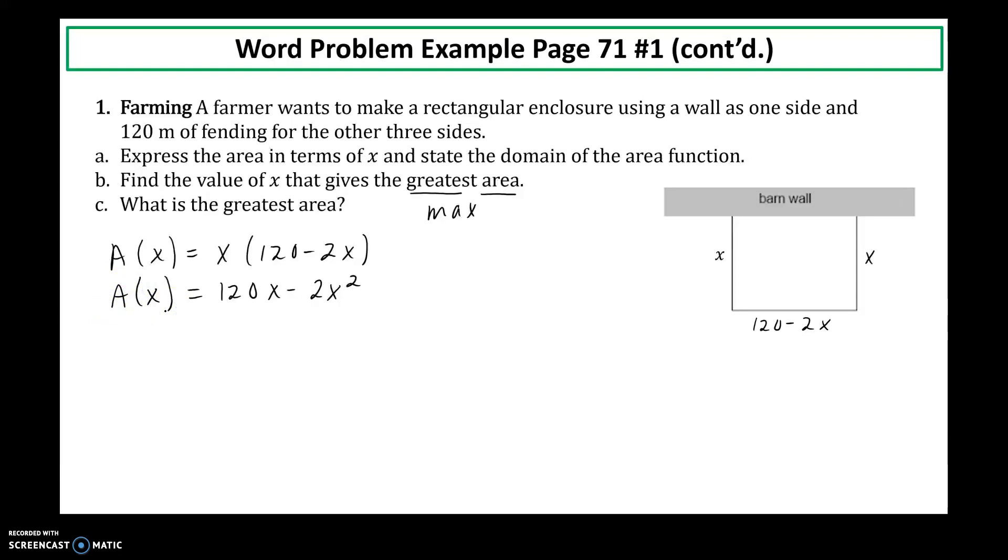How do I maximize? I have to look for the vertex. So x equals opposite of b all over 2a. So I get negative 120 all over negative 4. So 30 will be the x value that maximizes my function. So 30 meters, we're talking about lengths of fencing here is x. So find the value of x that gives the greatest area. So 30 would be my answer to part b.